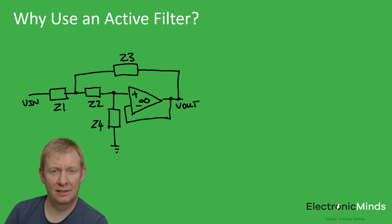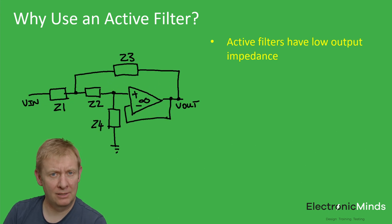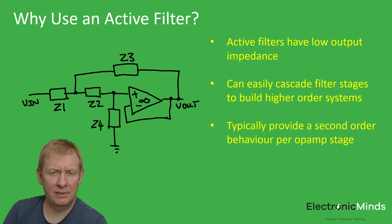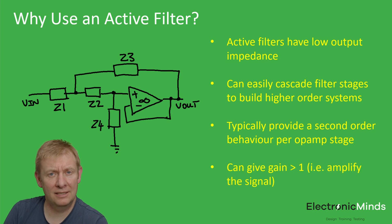Why use an active filter? Active filters are great because they have very low output impedance, which is very useful if you want to cascade multiple stages together to build higher order prototypes. The typical stage uses a single op-amp to provide a second-order characteristic, and because it's an active filter, it can also provide a gain of greater than unity, meaning we can amplify the signal if we want to.